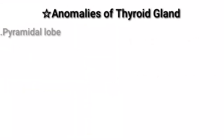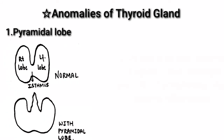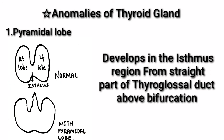Anomalies of thyroid gland. First: pyramidal lobe. There is no pyramidal lobe in a normal thyroid gland, but in some conditions a pyramidal lobe develops from the isthmus region. The origin is from the straight part of the thyroglosal duct above its bifurcation.